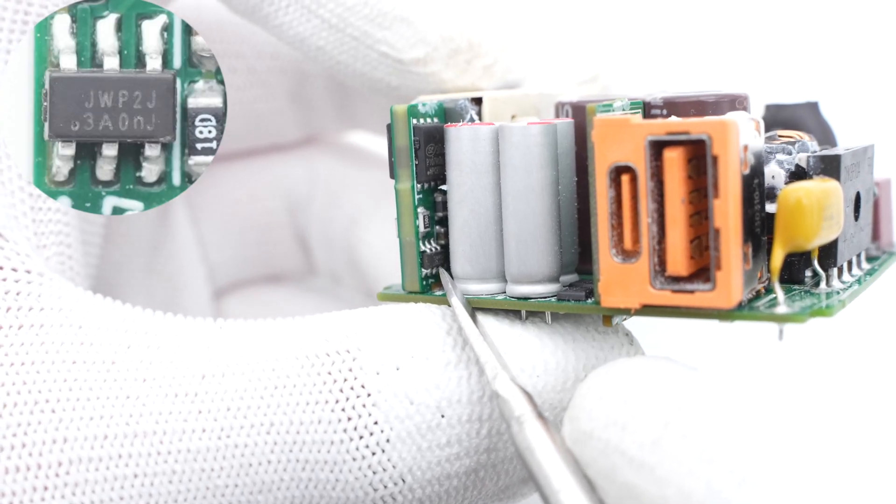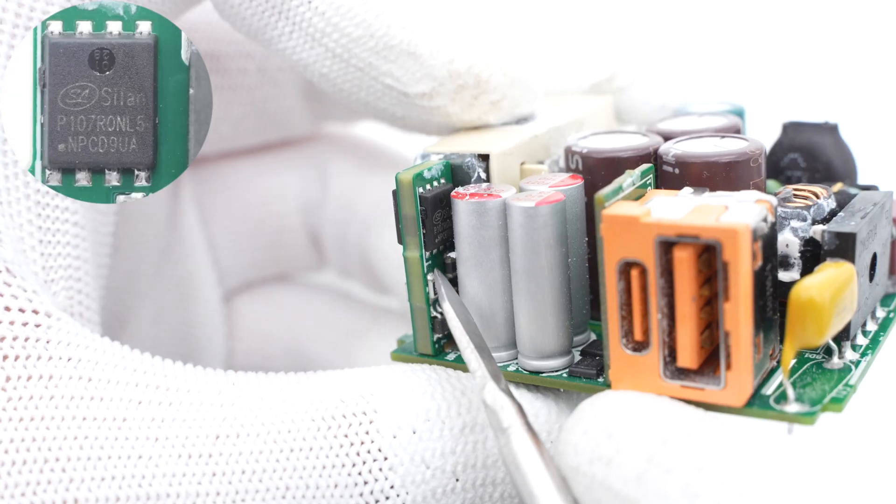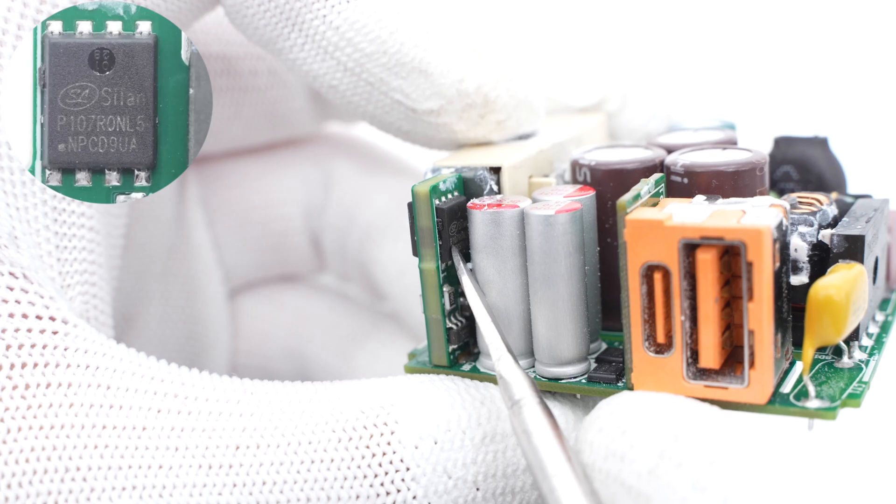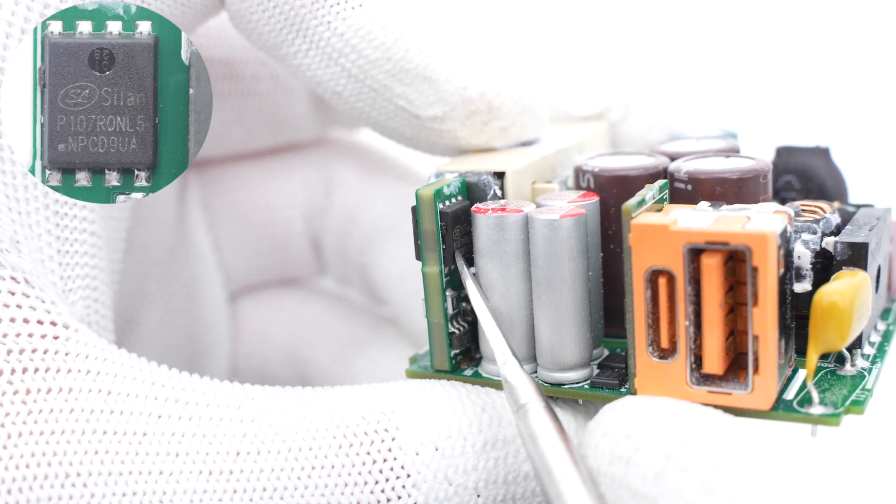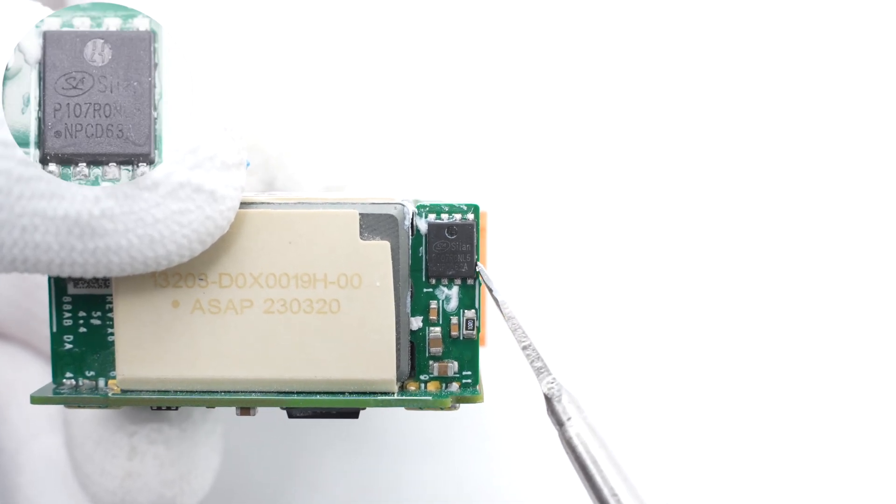Here is the synchronous rectification controller, soldered on the PCB of the planar transformer. The synchronous rectifier is also from CELANESE and adopts PDFN-8 5x6 package, 100V 7mΩ. Another same MOSFET is on the opposite side.